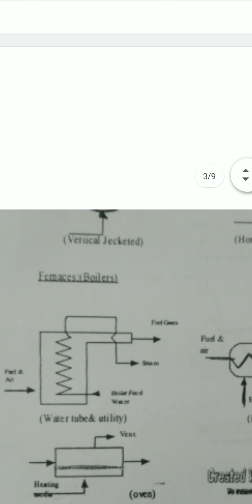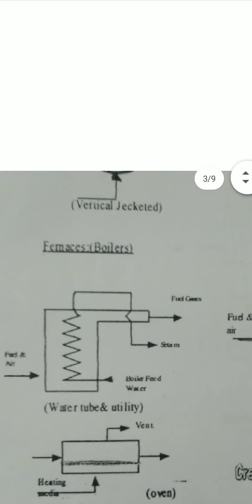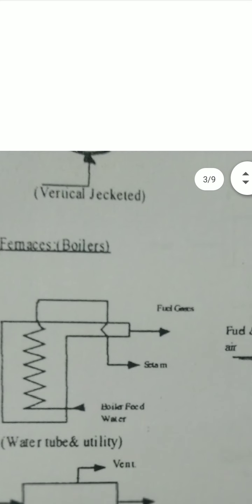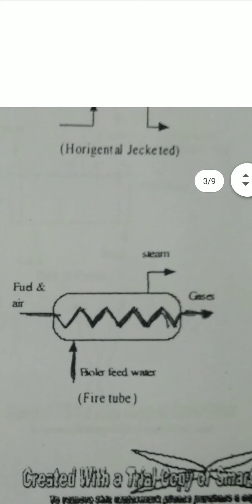We have boilers discussed in this symbol section as well. Water tube and utility boilers are shown. Fuel and air passes through it, boiler feed water enters from one side, and fuel gases and steam come out. The fire tube boiler symbol is also here — from one side fuel and air pass through, with heating coil symbol under the water. Steam and gases come out from another side.